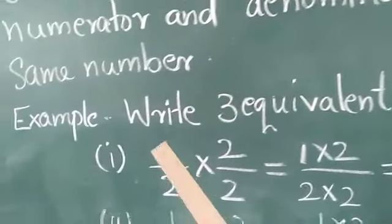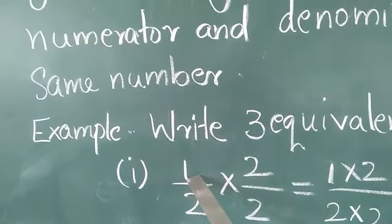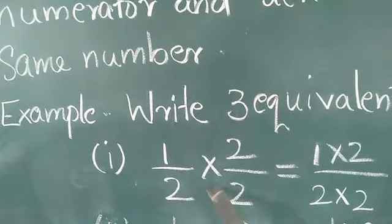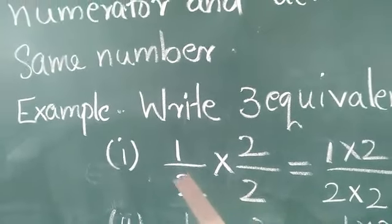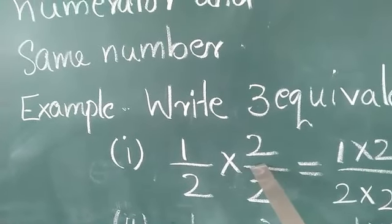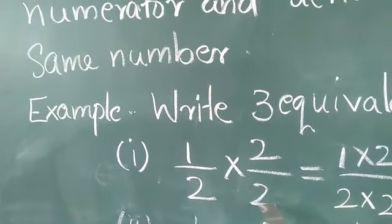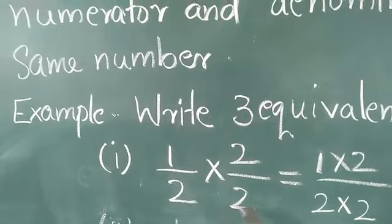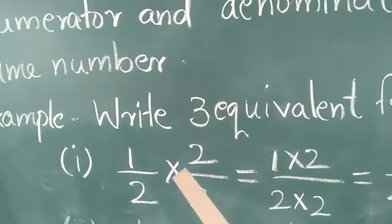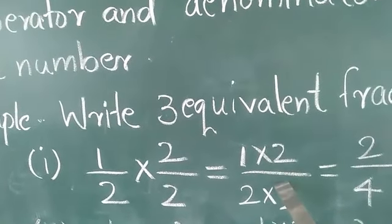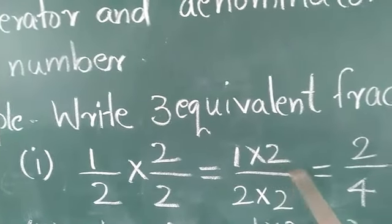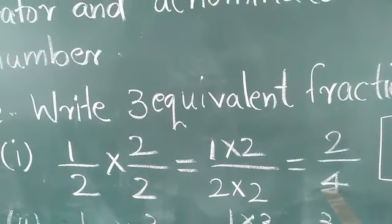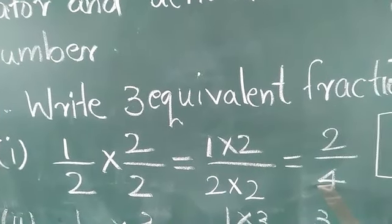We write 1 by 2 here, and to get the first equivalent fraction, we are multiplying 1 by 2 with 2 by 2 — that means multiplying numerator and denominator by the same number. You can write any number: 6 by 6 or 7 by 7 like that. Then we multiply: 1 into 2 by 2 into 2. What is 1 into 2? 2. 2 into 2? 4. So we got 2 by 4, which is an equivalent fraction of 1 by 2.